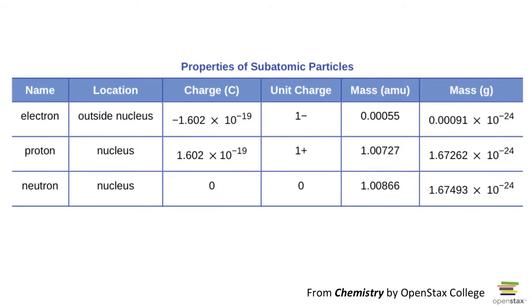Here is a table showing some properties, some data for the subatomic particles: electrons, protons, and neutrons, where they're located, what their charges are in coulombs, their unit charge—electron is negative one, proton is plus one—their masses in what are called atomic mass units, or AMU (more on that in a bit), and their masses in grams. And notice 10 to the minus 24th grams, very small mass for a single atom.